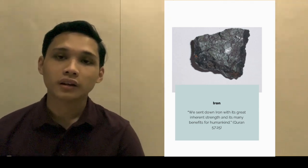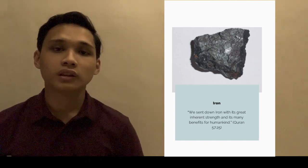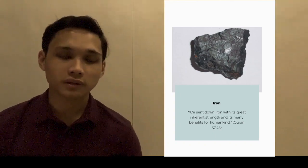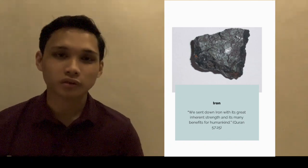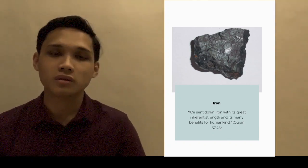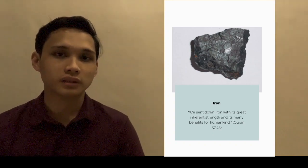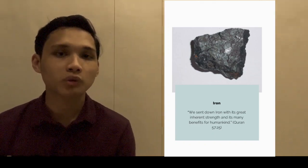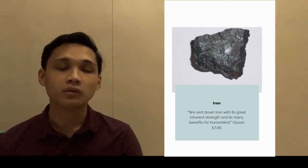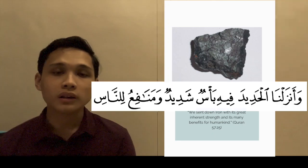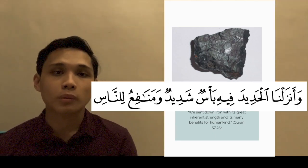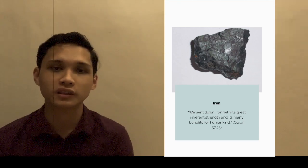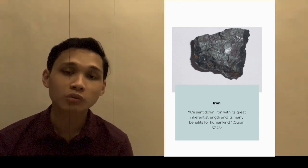The second fact in the Quran is about iron. Actually, iron is not natural to the earth. It did not form on earth but came down to earth from outer space. This may sound strange, but it is true. Scientists have found that billions of years ago, the earth was struck by meteors. These meteors were carrying iron from distant stars which had exploded. In Surah Al-Hadid verse 25, it says 'We sent down iron with its great inherent strength and its many benefits for humankind.'